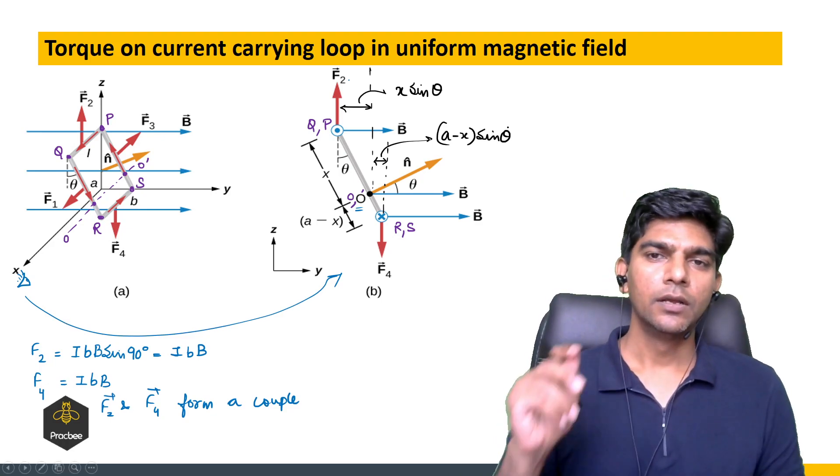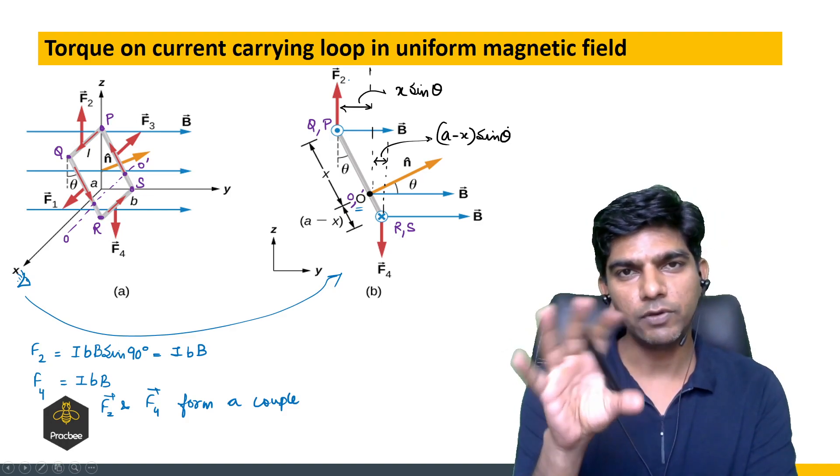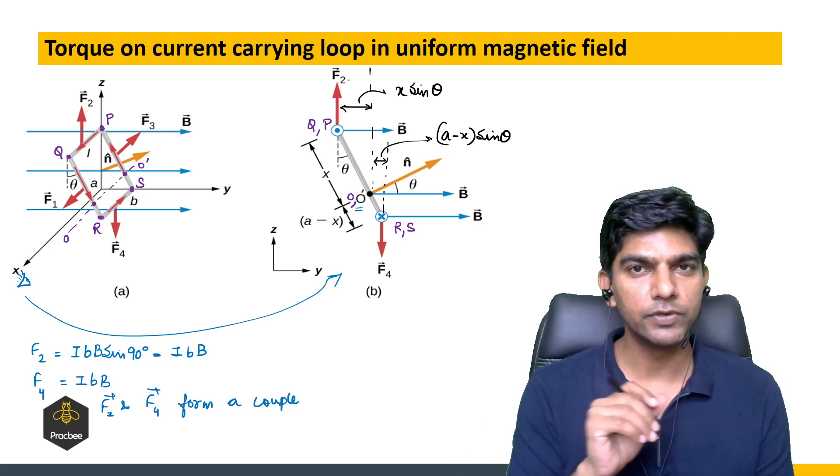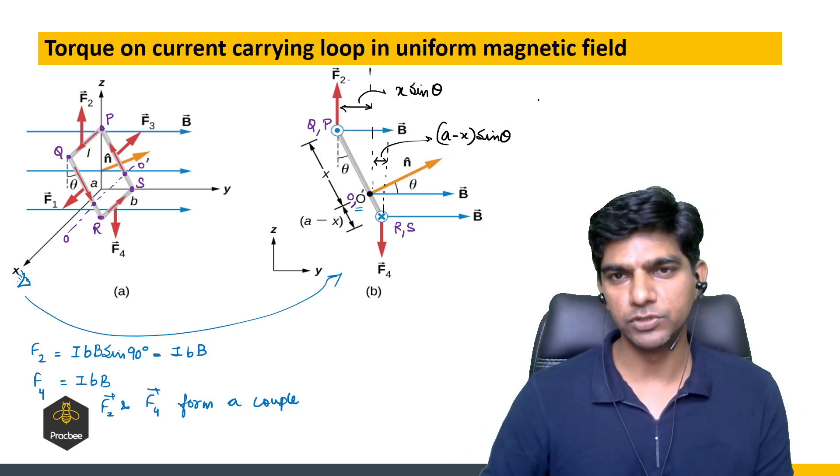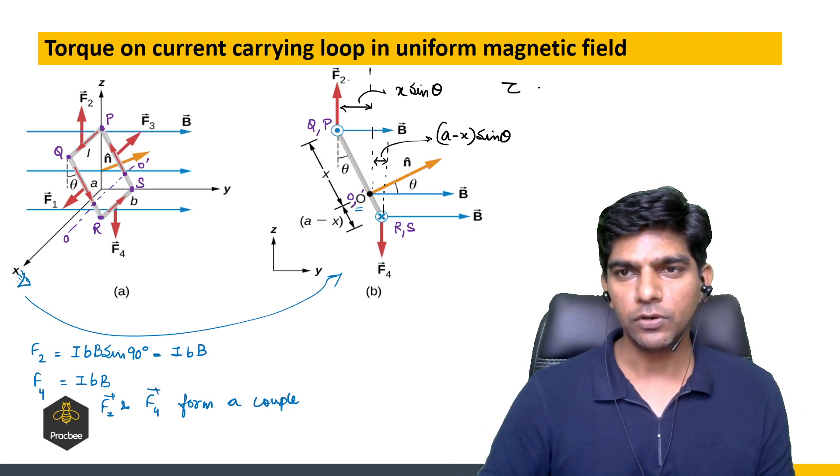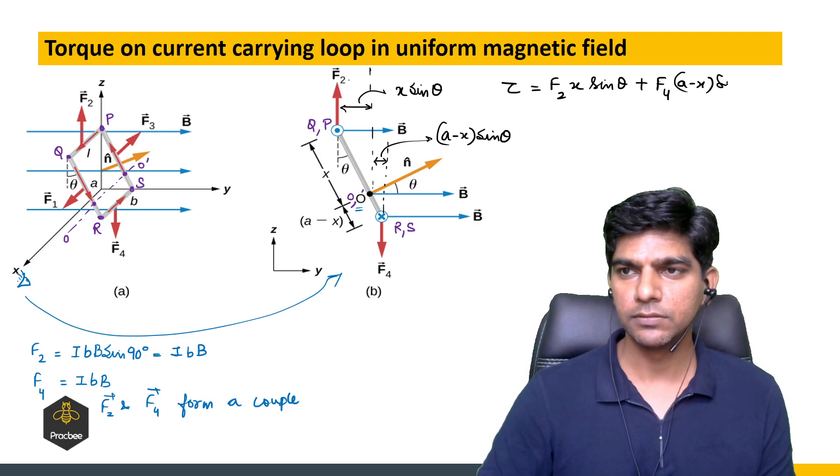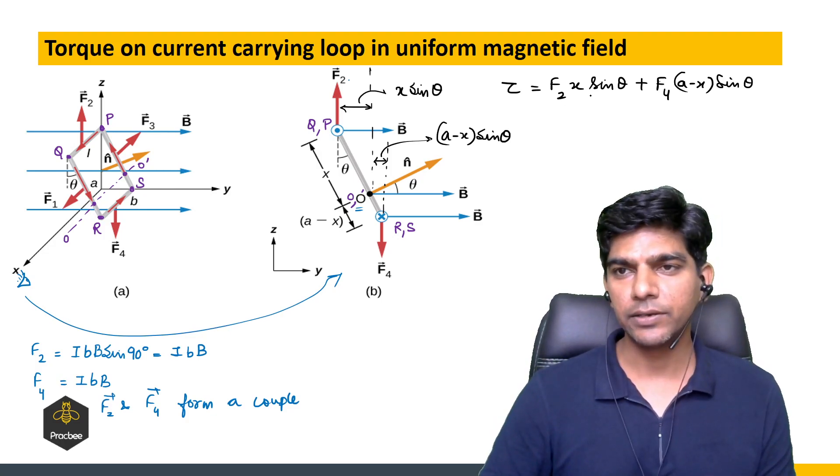Now the torque of both these forces will be clockwise. F2 is rotating it clockwise and F4 is also rotating it clockwise, giving A minus X sin theta.